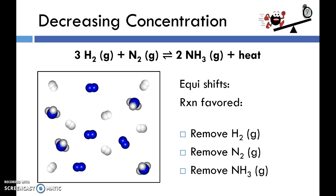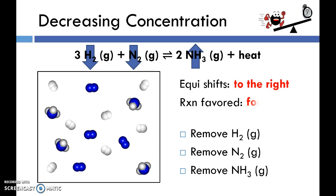If we remove some NH3, collisions between H2 and N2 become more likely, so we see an increase in ammonia concentration. The equilibrium shifts to the right and the forward reaction is favored. Whenever you remove a substance — whether on the products or reactant side — the system shifts to replace that substance. It will favor whichever reaction, forward or reverse, produces the substance you removed.